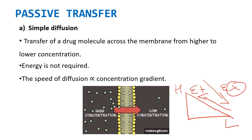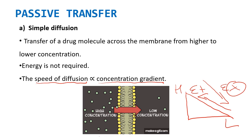The speed of diffusion is directly proportional to the concentration gradient. It means how fast the molecules will exchange depends on how high the concentration difference is. You can see the same concept in the figure, where molecules are exchanging from higher concentration to lower concentration. That's all about simple diffusion.